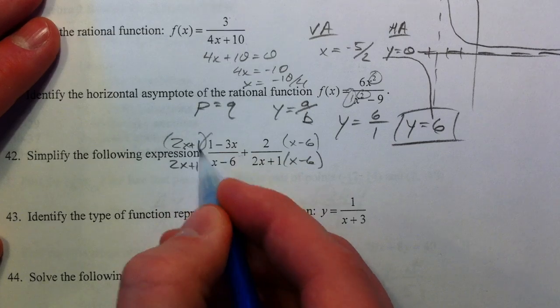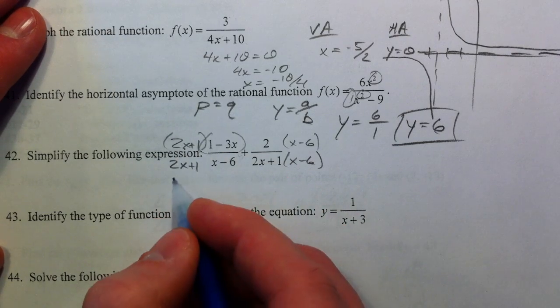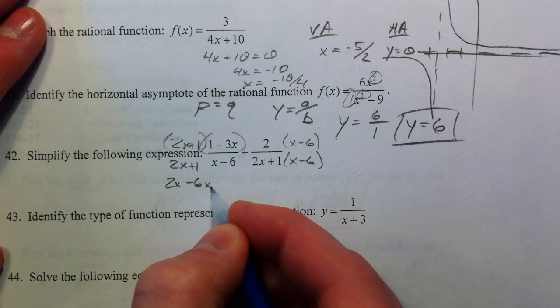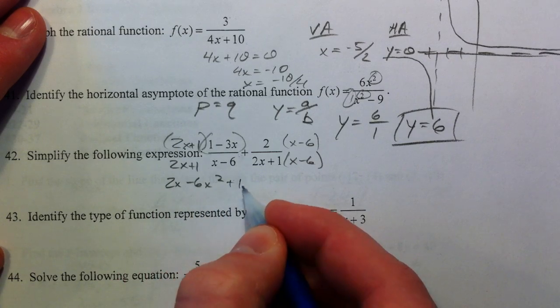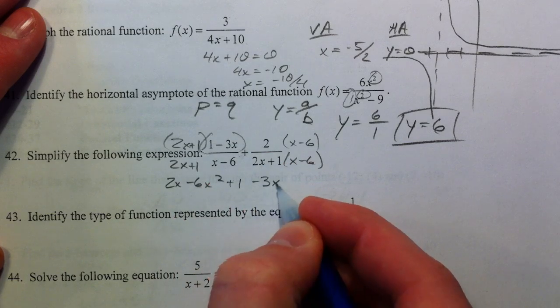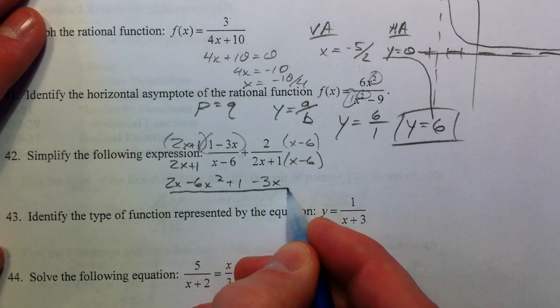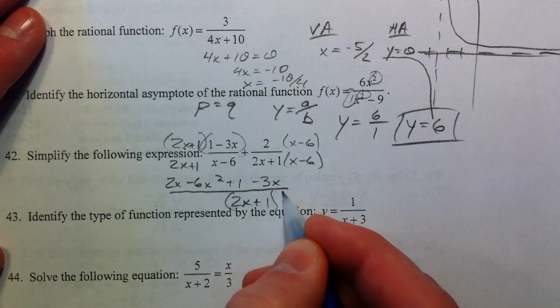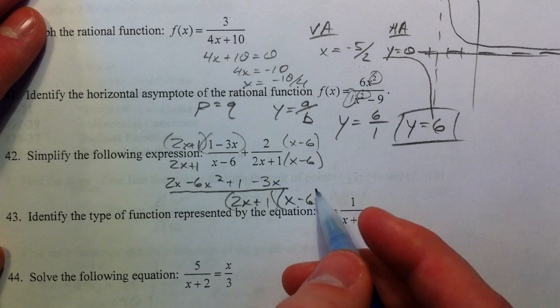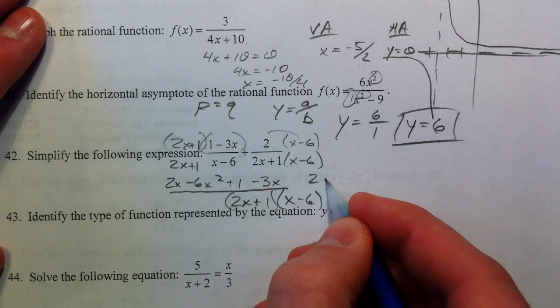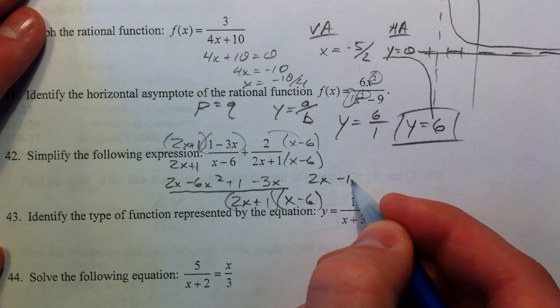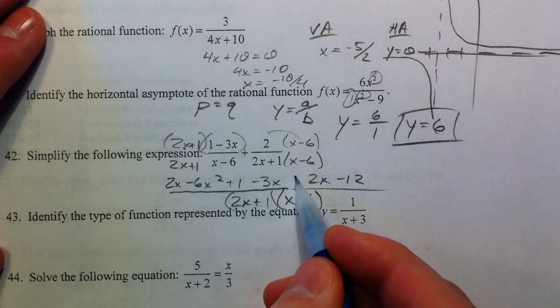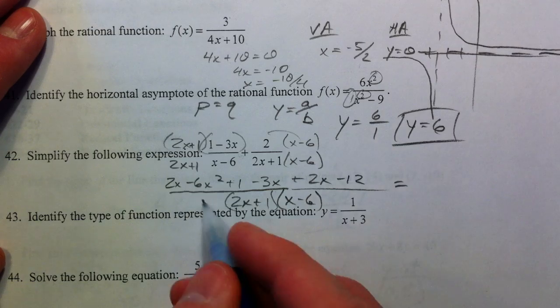So we're going to have to FOIL this out on the left. We get 2X minus 6X squared plus 1 minus 3X. And that's got the common denominator of 2X plus 1 and X minus 6. And so, then we're going to add to that 2X minus 12. Just making sure we distribute. We're going to add to it. And so, we're going to combine our like terms.